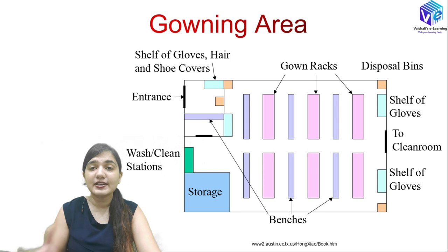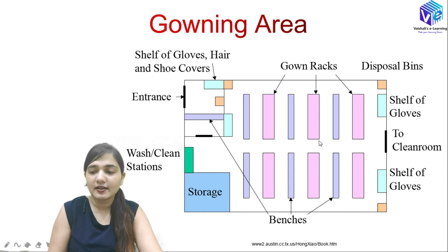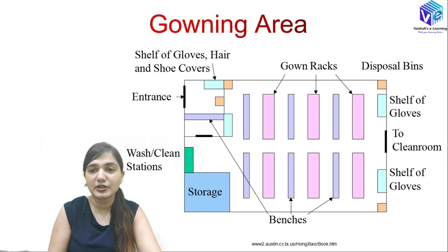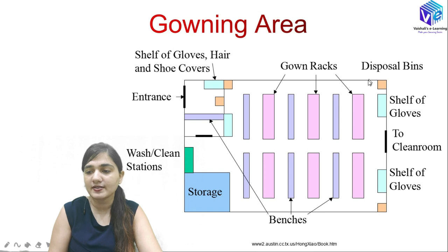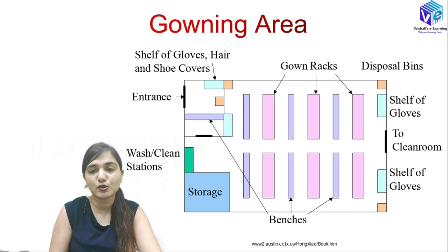The gowning area is located just in front of the clean room. It contains gown racks, storage, and wash or clean stations. At the entrance there is a shelf of gloves and shoe covers — you must wear gloves, hair cover, and shoe covers. There are also disposal bins and additional glove shelves. From the gowning area you move into the clean room.